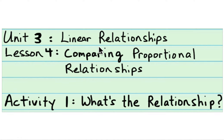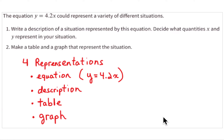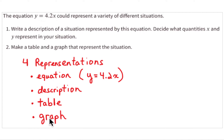This is Unit 3, Linear Relationships, Lesson 4: Comparing Proportional Relationships, Activity 1: What's the Relationship. In this activity you are given an equation — that's all you're given — and you are asked to describe a situation based on this equation and then complete the other representations. Remember there are four representations.